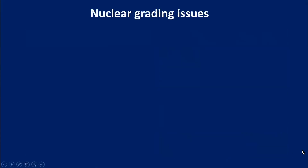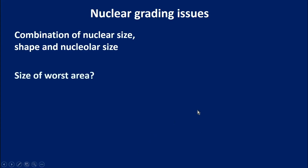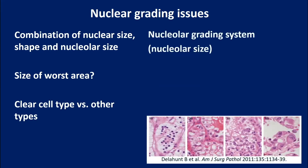There are issues pertaining to the nuclear grade. First, it represents a combination of nuclear size and shape. The size of the worst area was not well defined, and it was not clear whether it pertains only to clear cell versus other types such as papillary, chromophobe, etc. Thus, a new modification was introduced some years ago, known as a nuclear grading system based primarily on nuclear size.